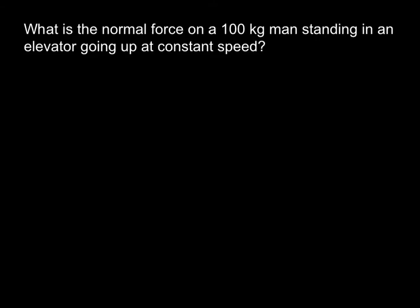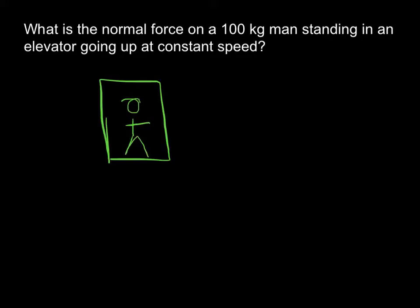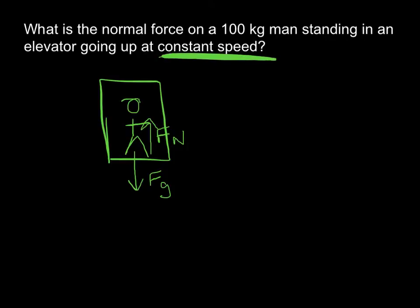Our first problem is fairly straightforward — we have a man in an elevator. Our first step is to draw a diagram. We've got our man standing in an elevator, and we label the forces on him. We have the force of gravity pulling him down, and since he's standing on a surface, we have the normal force pushing him up. Now here's a key phrase to look for: constant speed.